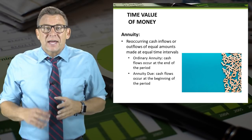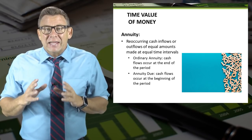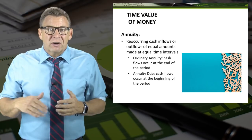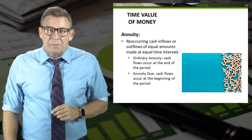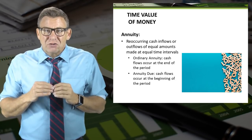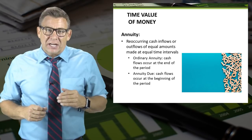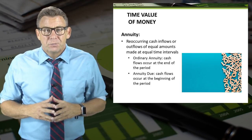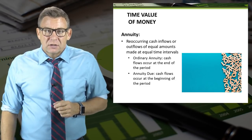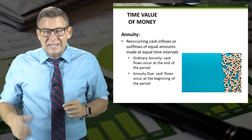An annuity is a reoccurring cash inflow or outflow of equal amounts made at equal time intervals — regular cash flows occurring year after year rather than a one-time amount. There are two classifications: an ordinary annuity is when the cash flow occurs at the end of the period, and an annuity due is when the cash flow occurs at the beginning of the period. For capital budgeting purposes, annuities are ordinary annuities. In accounting, the only example of an annuity due is when we price capital leases.